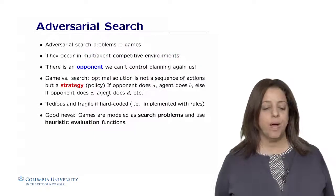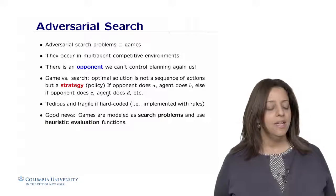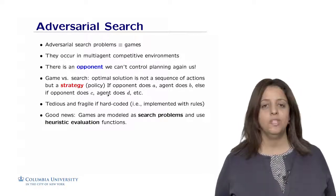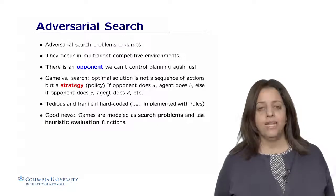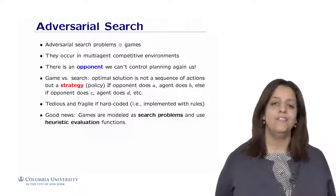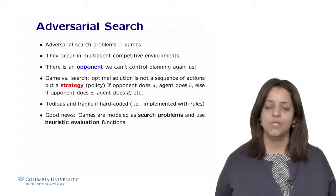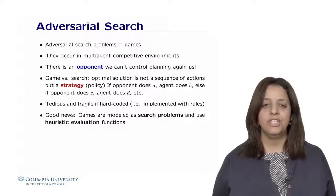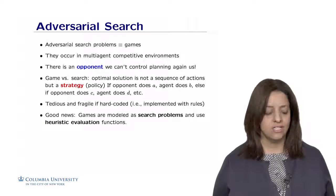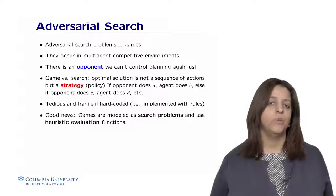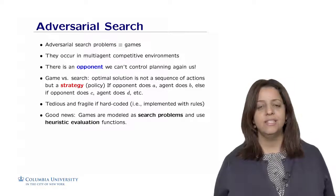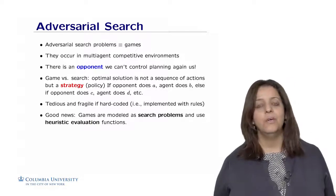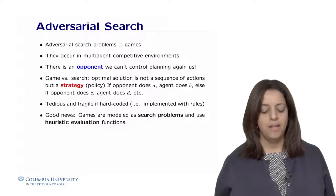Adversarial search problems are also known as games. They occur in multi-agent competitive environments in which there is an opponent we can't control planning against us. In games, we look for the optimal solution, which is not a sequence of actions anymore, but a strategy or policy. If the opponent does A, we do B. If the opponent does C, we do D.